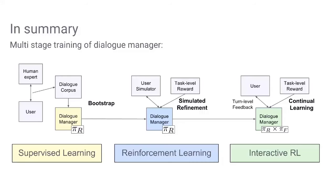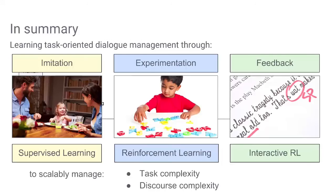In summary, we are proposing a system with the combined benefits of supervised learning followed by reinforcement learning simulations, and in actual deployment, a combined policy for turn-level feedback and task-level reward. This is similar to how humans learn — through imitation, experimentation, and feedback. Thank you.